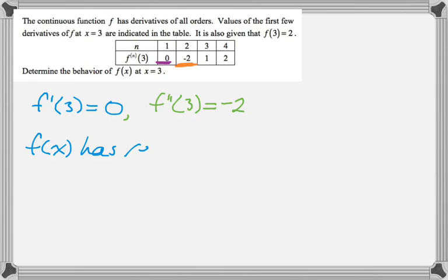So since f prime is 0, f double prime is less than 0, I'm going to say that there's a relative maximum. And then I'm going to say by the second derivative test.